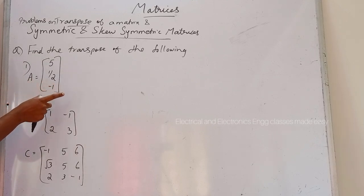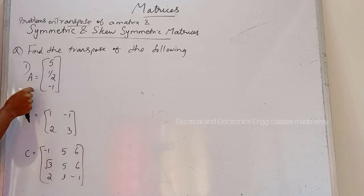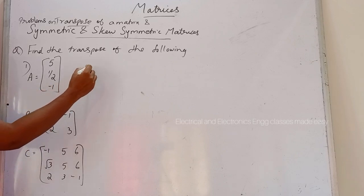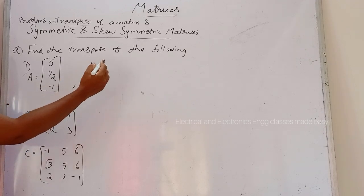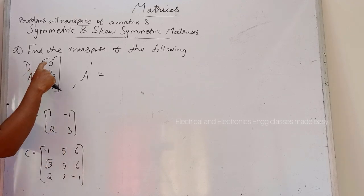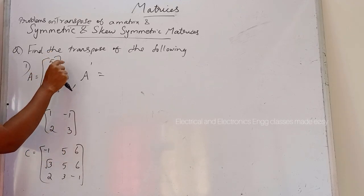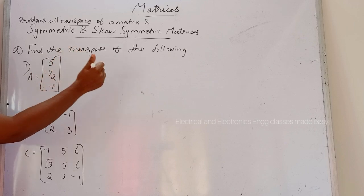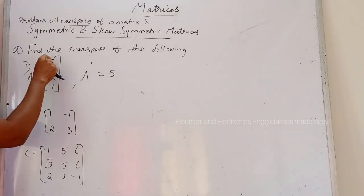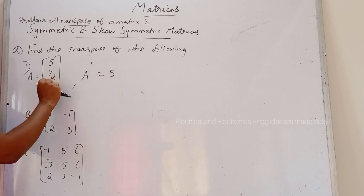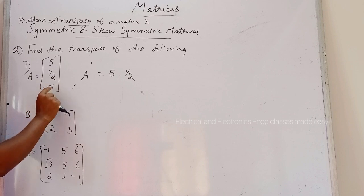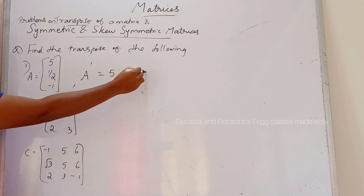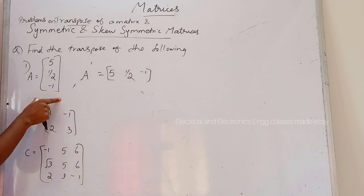First problem: find the transpose of the following matrices. Matrix A is equal to [5, 1/2, -1]. The transpose of A, written as A transpose, is obtained by changing rows into columns. Here there are 3 rows, so 5 becomes the first column, 1/2 becomes the second column, and -1 becomes the third column. This is the transpose of this matrix.